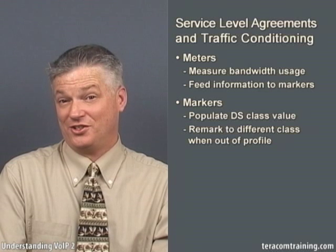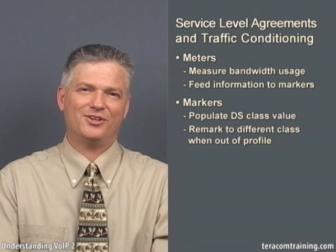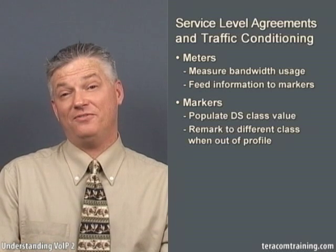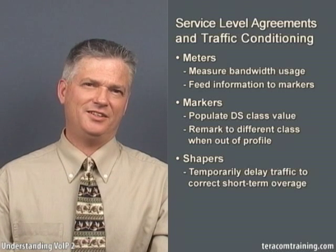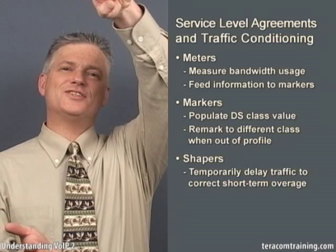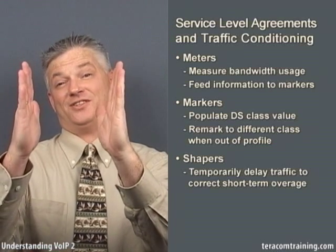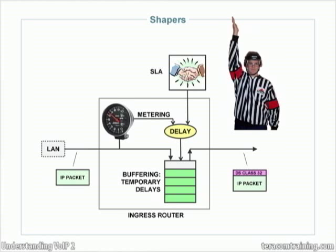We can get more extreme. Rather than just remarking packets, if we start having serious problems, we're talking about shapers and droppers. Traffic shaping is putting buffering on the input from a customer to deal with short-term overages. If they're bursting and their contract says they can only burst at that rate for a certain number of milliseconds and then they have to stop, but they keep going, what we can do is take this excess and park it temporarily in a buffer and send it out at a lower rate. This is called a shaper — it temporarily delays traffic to bring them back into profile.